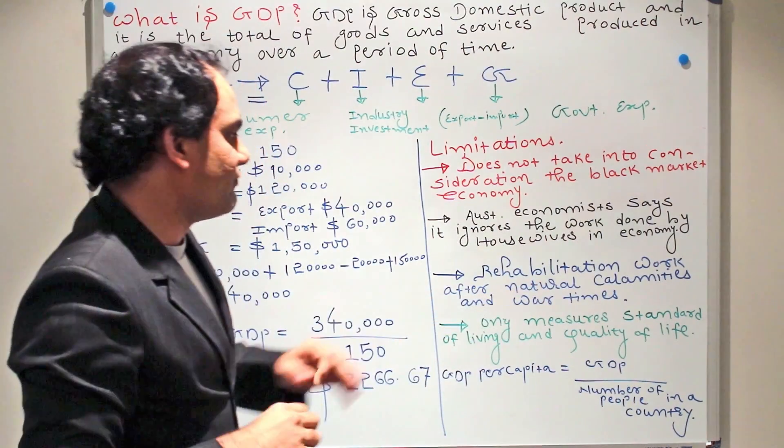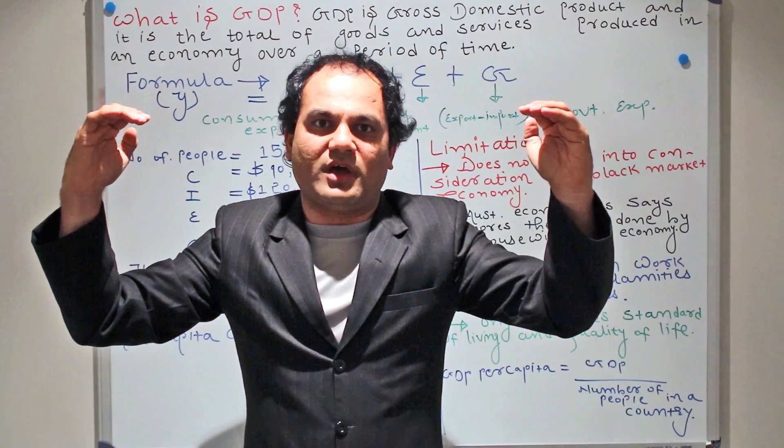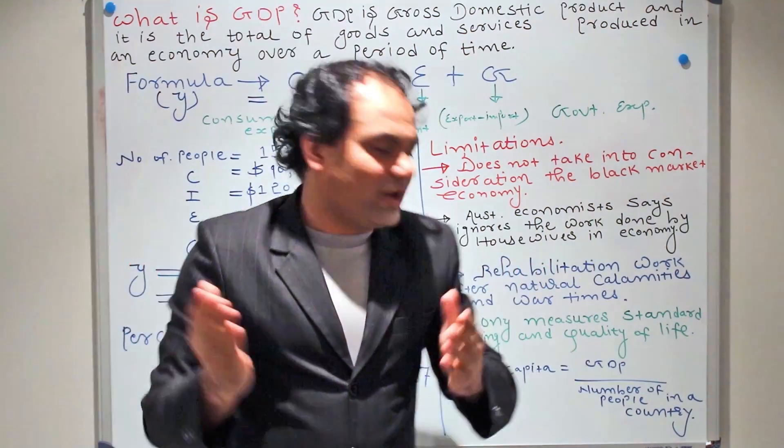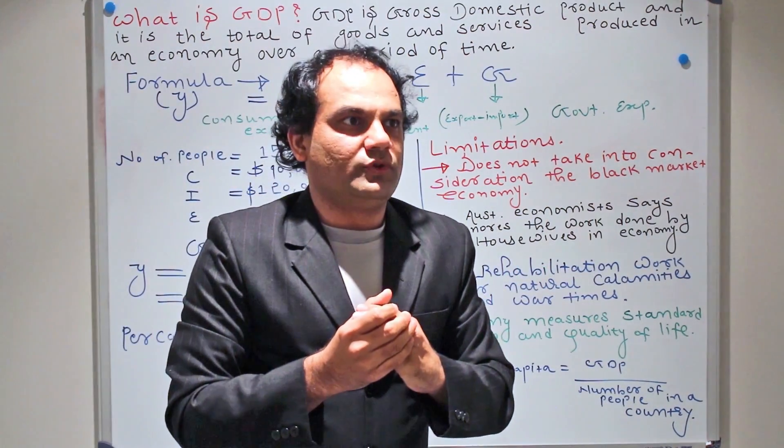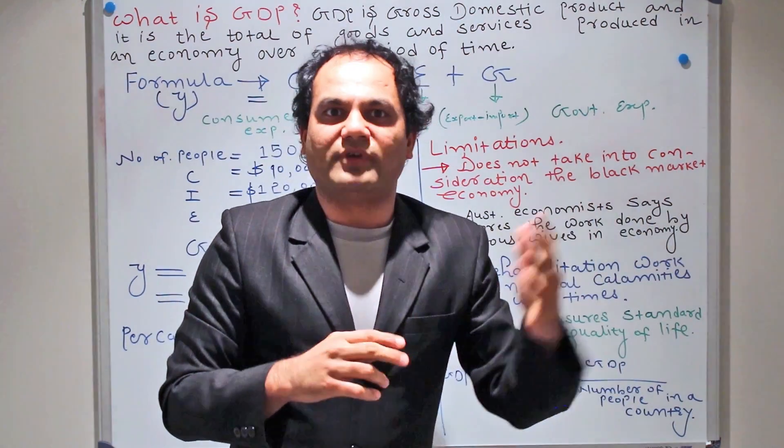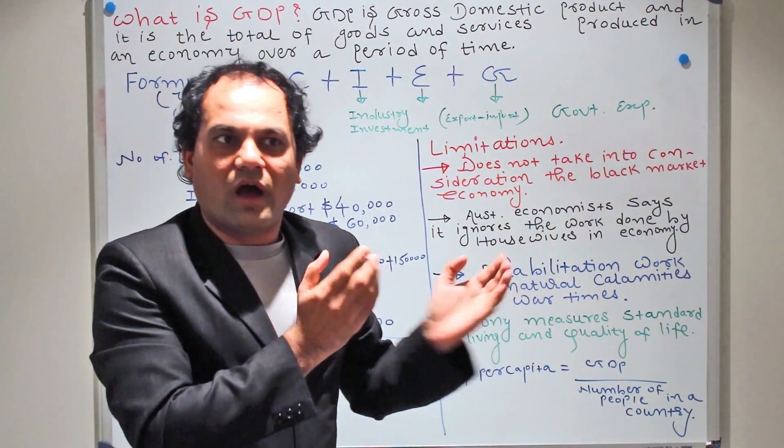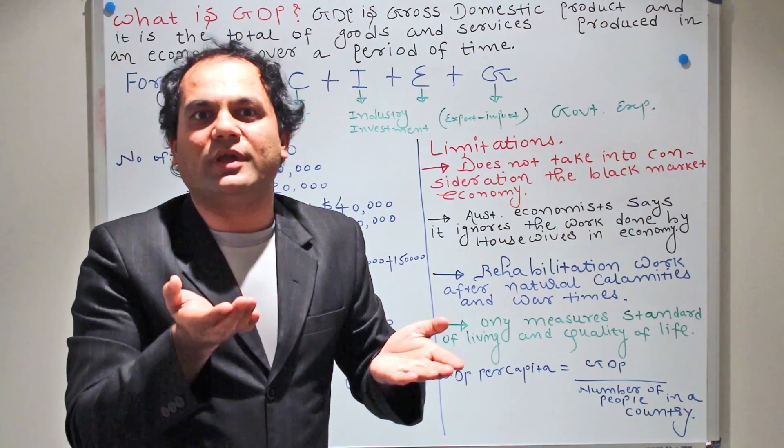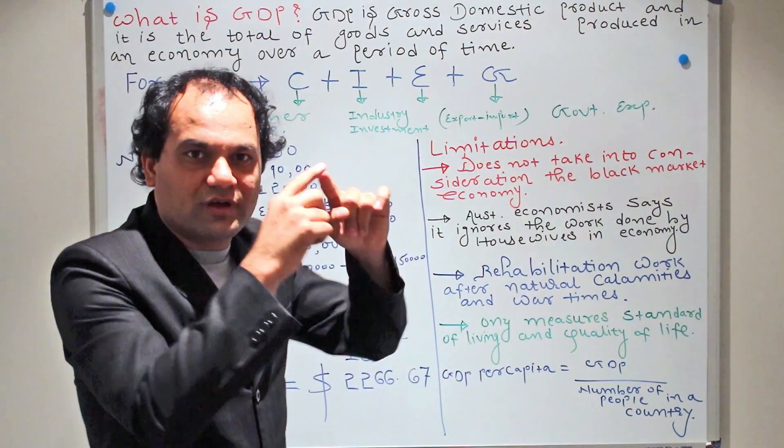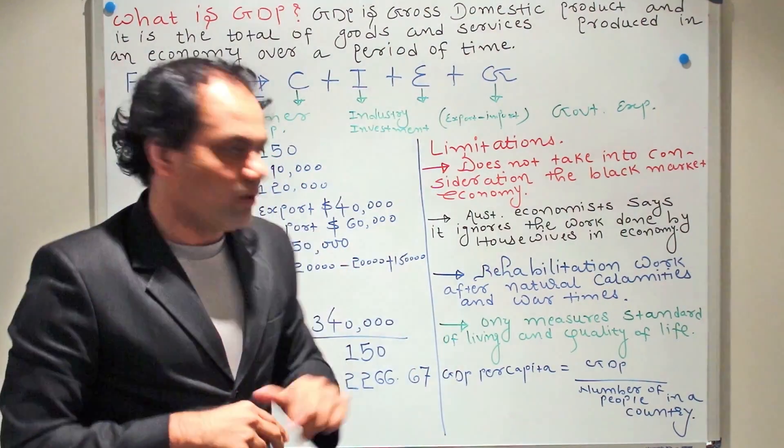And then comes the fourth limitation: it only measures standard of living and not quality of life. In economics, there are two different phenomena: standard of living and quality of life. Standard of living has something to do with earnings and jobs. Quality of life has something to do with your stress-free life, your life expectancy, your pollution-free life, crime-free life. GDP only represents standard of living. It only tells you how the citizens of the economy are doing as far as jobs are concerned, as far as money is concerned. It does not show us the larger picture where you have to take into consideration the quality of life.